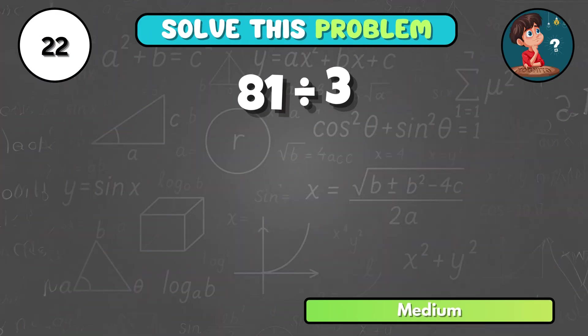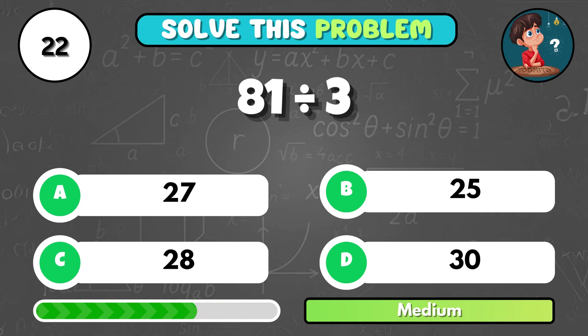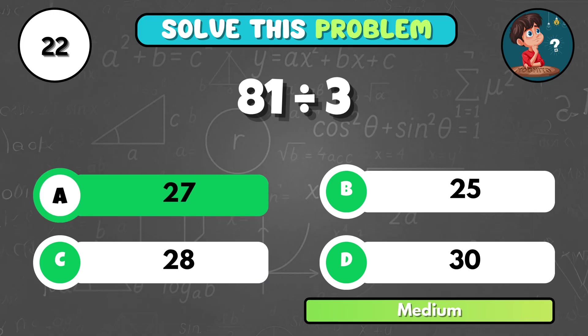How much do you get if 81 is divided by 3? It's A, 27.